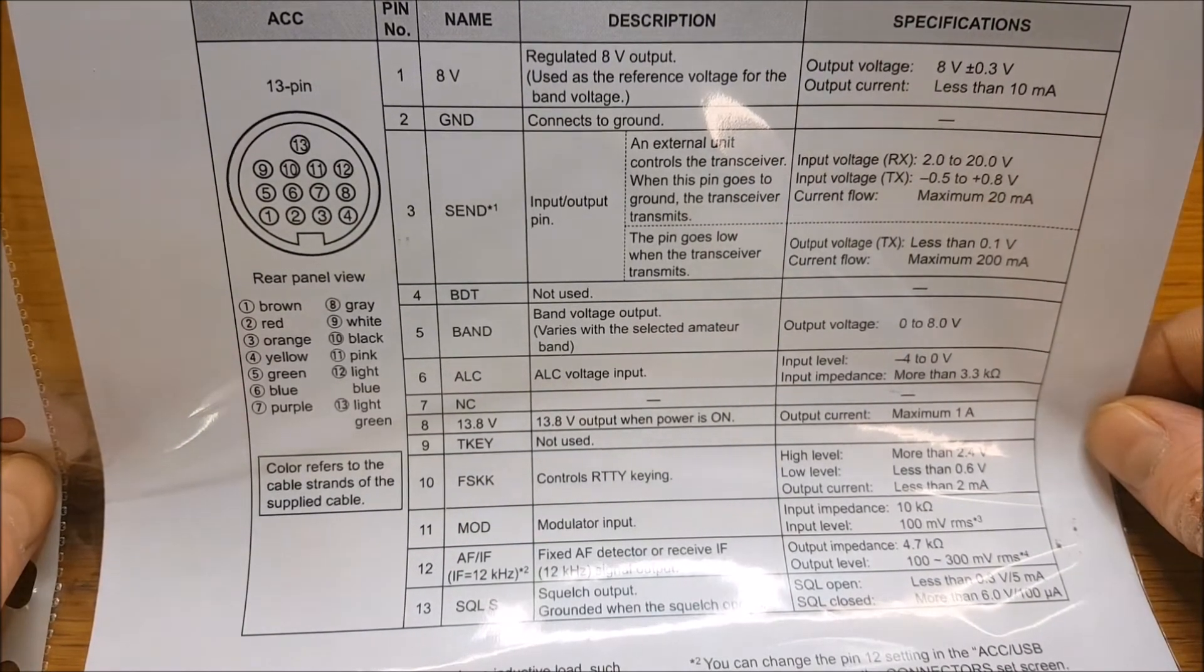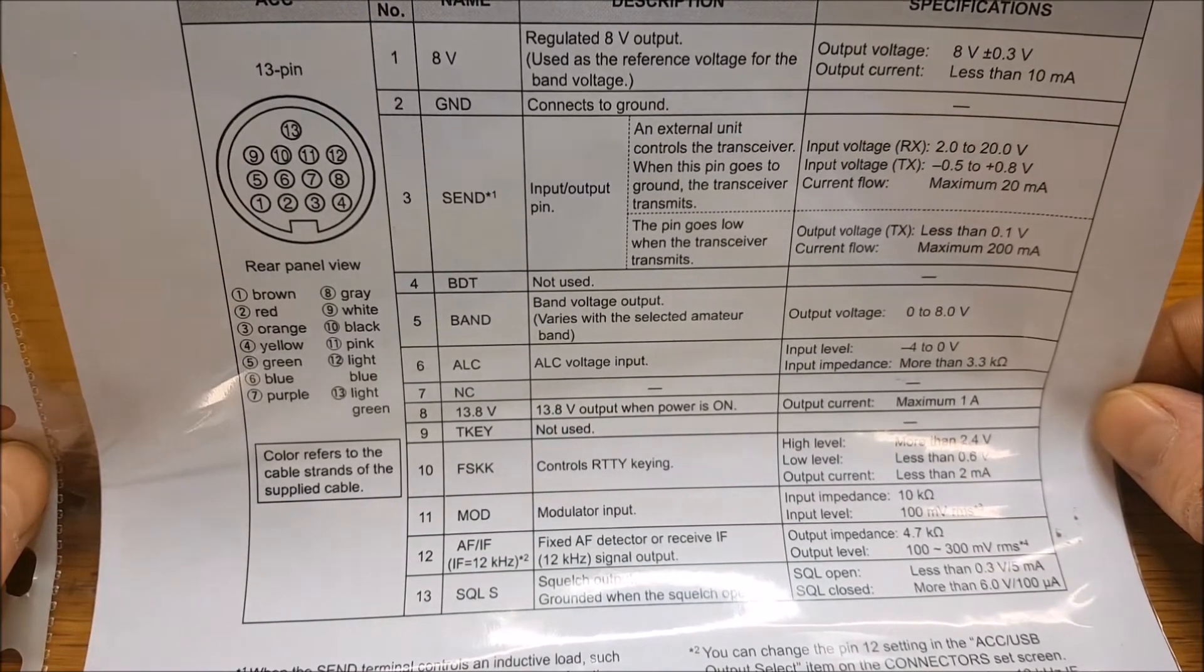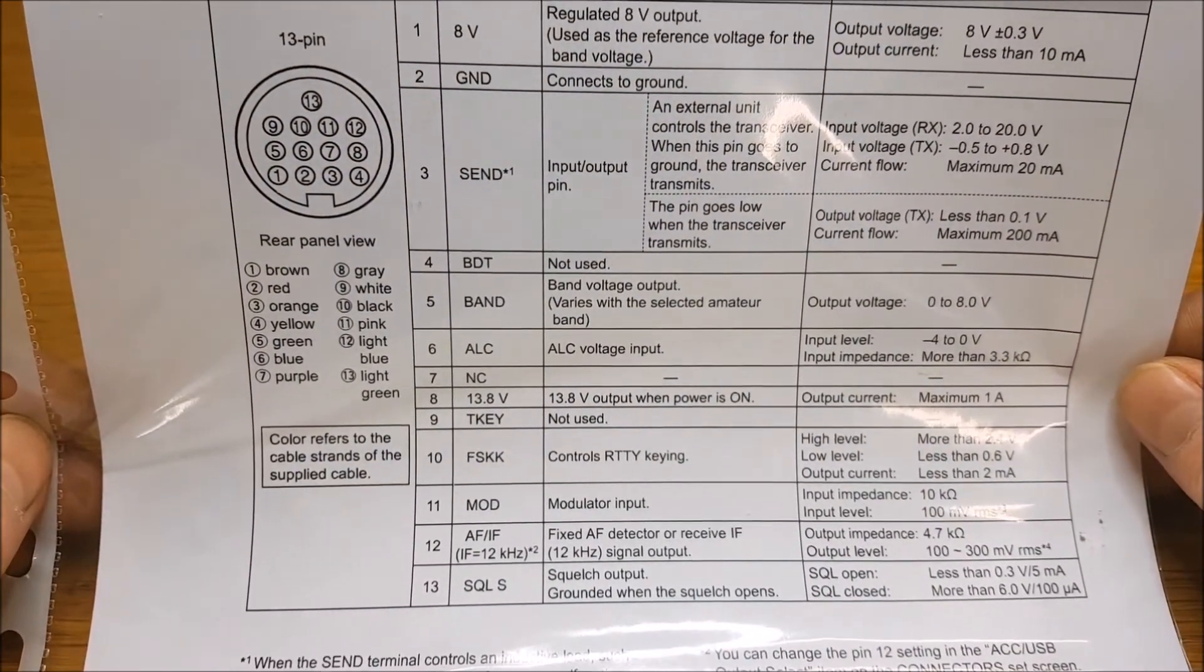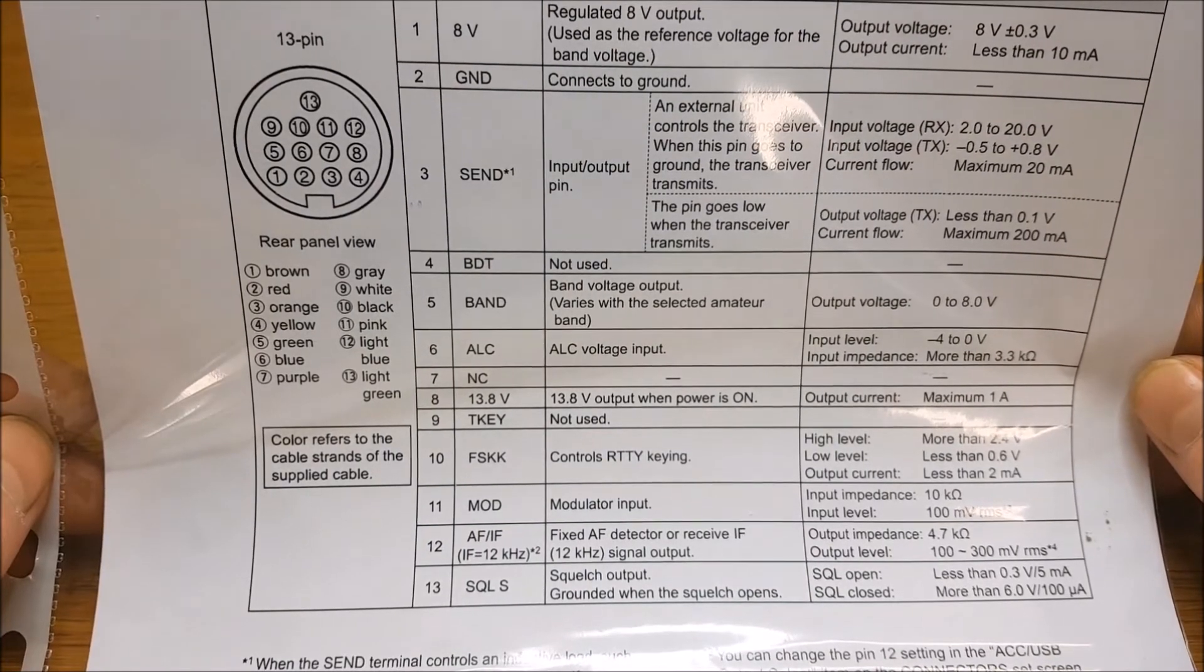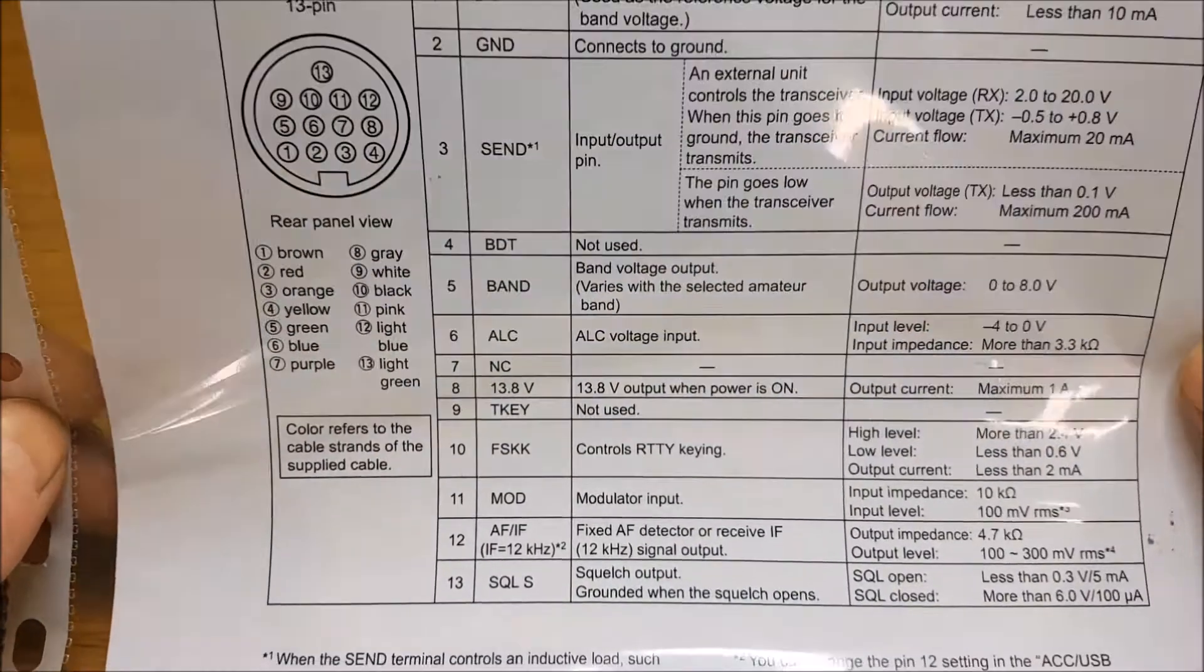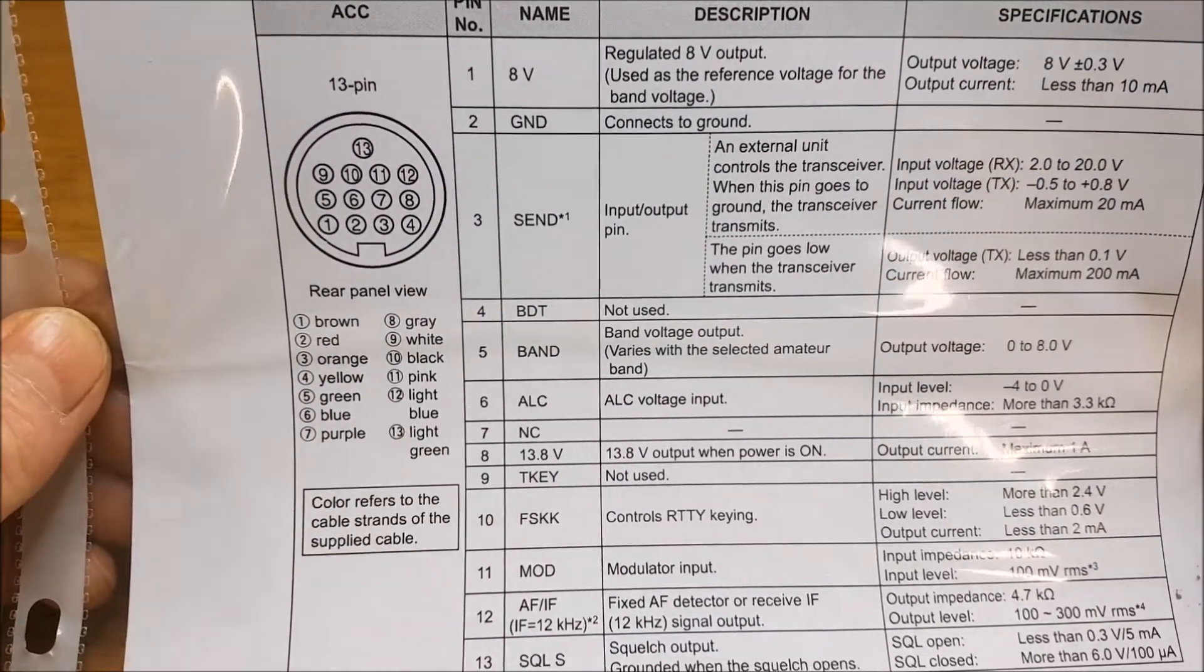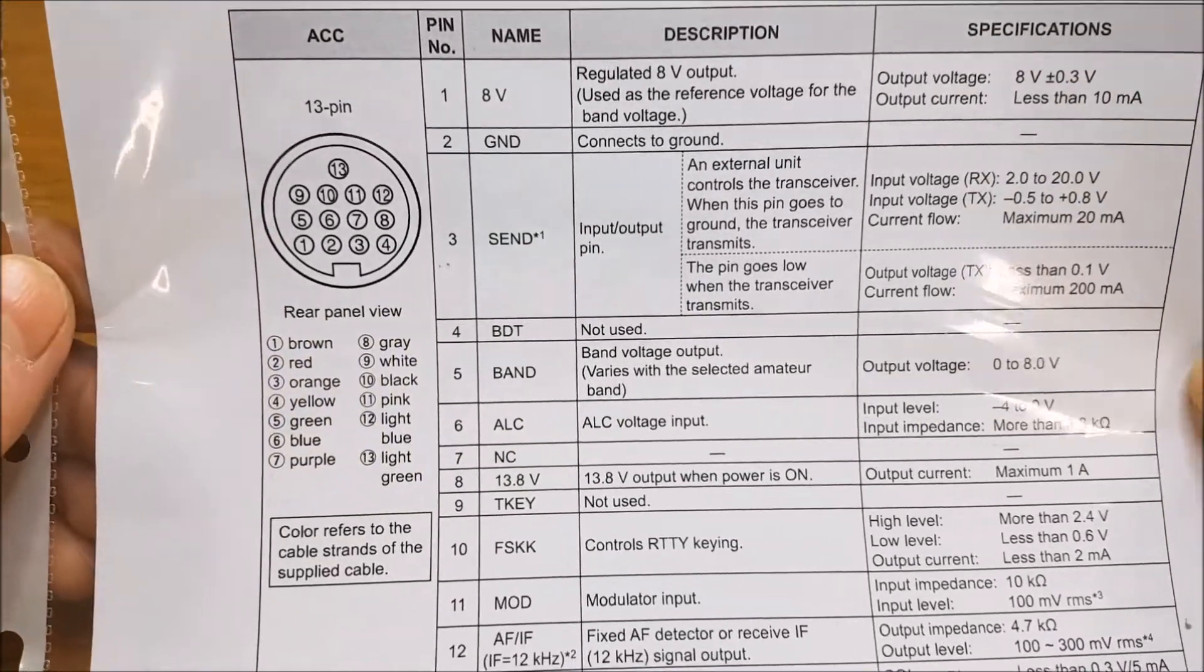We can see there our pin designations. We're going to be using pin 2 which is ground, we're going to be using pin 11, we're going to use pin 3 so that's our mod in and our foot switch. You can use that for a foot switch because once that goes to ground it will put the radio into transmit. We'll use the 13.8 volts out I suppose. This shows you here as well on this section the colors of the wires coming out of the little pre-wired plug that you get in the box with the radio, so if you're using that it shows you the color of the wires.